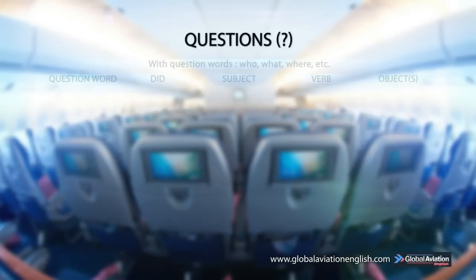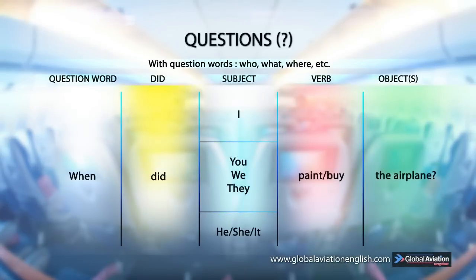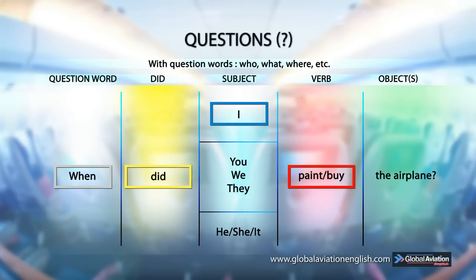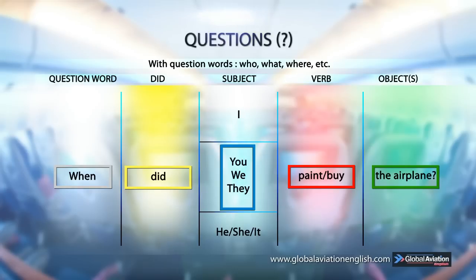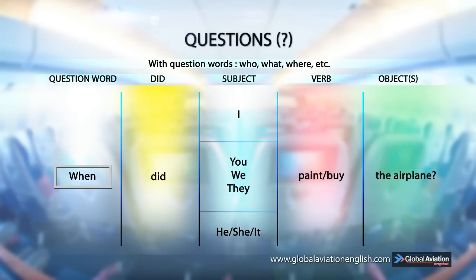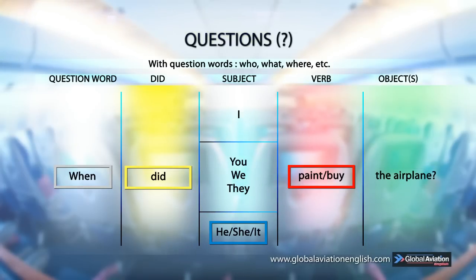Questions with question words — who, what, where, etc. When did I paint by the airplane? When did you, we, they paint by the airplane? When did he, she, it paint by the airplane?